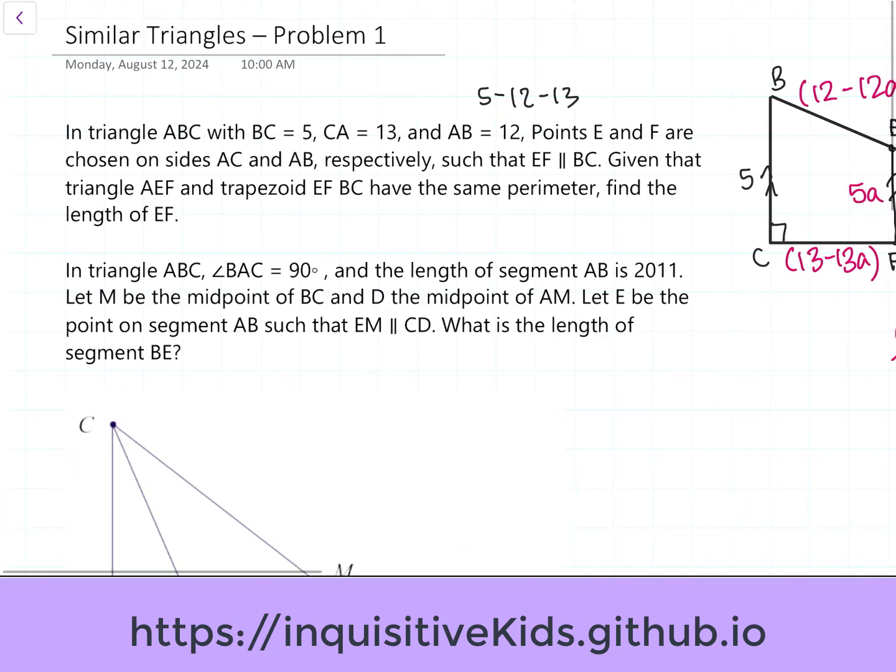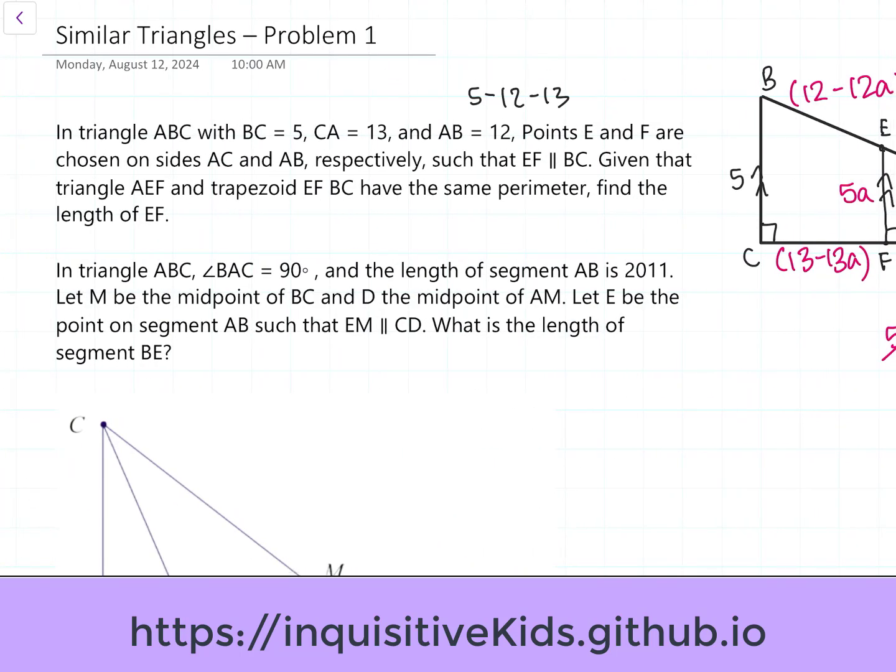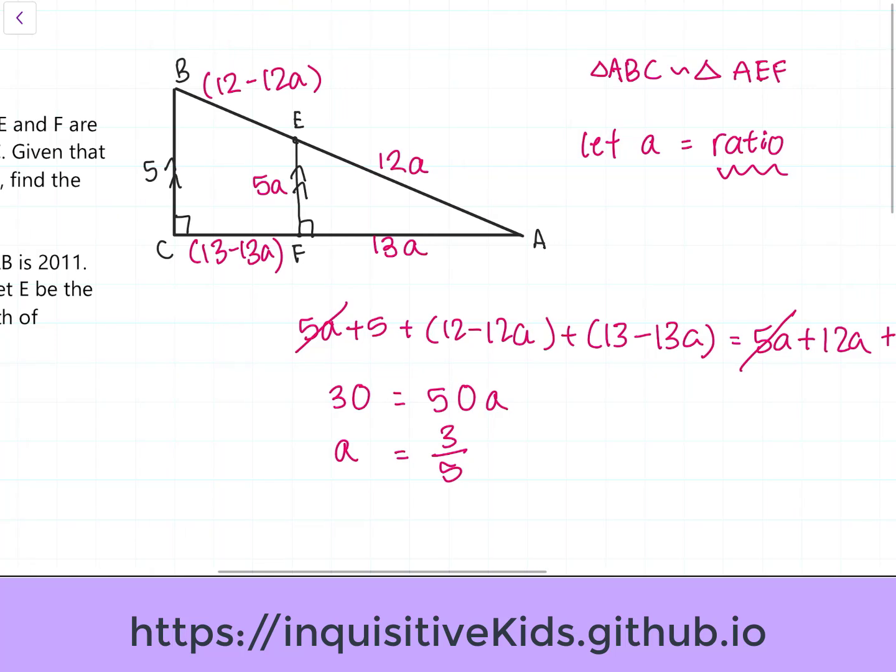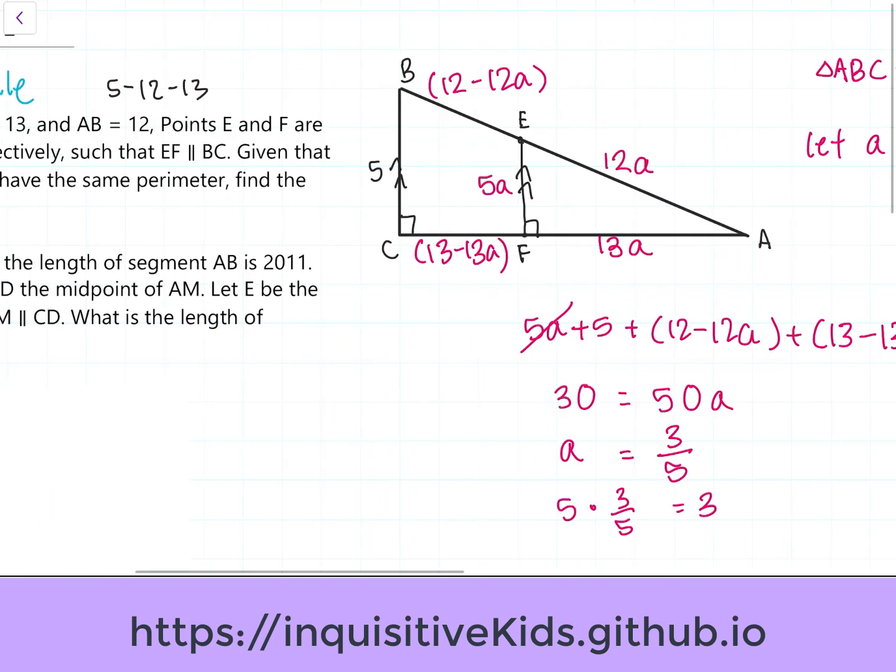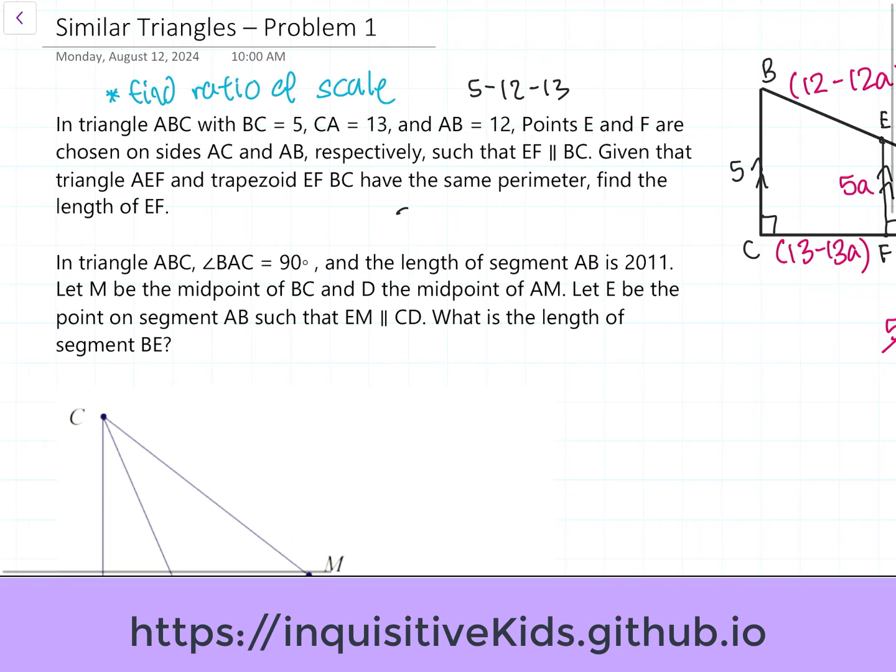And when solving for similar triangles, it is very important to find the ratio of how much it is scaled by. So, find the ratio of scale. So, now that we know what A is, we can definitely find out EF. EF is 5A, so all we do is 5 times 3 over 5, which is 3. So, the final answer to the first problem would be 3.